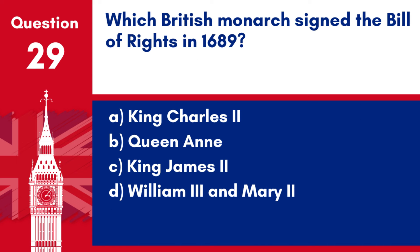Question 29. Which British monarch signed the Bill of Rights in 1689? a. King Charles II. b. Queen Anne. c. King James II. d. William III and Mary II. Answer: d. The Bill of Rights was signed by William III and Mary II, establishing the constitutional monarchy and setting out the rights of Parliament and limits on the monarch's power.